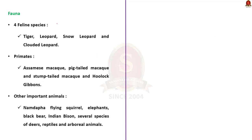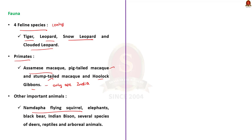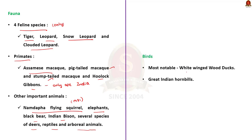Regarding flora, there are more than 150 timber species. Pinus merkusii and Abies delavayi are not found anywhere in India except this national park. One of the rarest and most endangered orchids, the Blue Vanda, is found here. A famous local medicinal plant, Mishmi Teeta, used for all kinds of diseases, is also available. Regarding fauna, it is the only park in the world to have four feline species of big cat: tiger, leopard, snow leopard, and clouded leopard. Primate species include Assamese macaque, pig-tailed macaque, and stump-tailed macaque. Hoolock Gibbons, the only ape species in India, also dwell here, along with the critically endangered Namdapha flying squirrel, elephants, black bear, Indian bison, and great Indian hornbills.